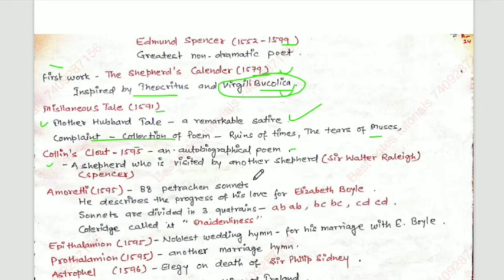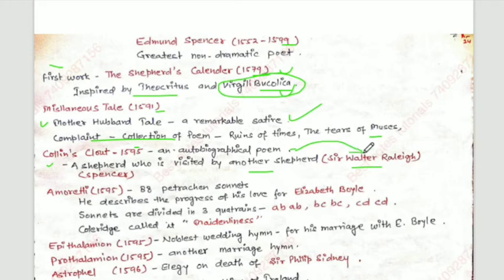In Colin Clout, a shepherd is visited by another shepherd representing Sir Walter Raleigh. So if asked who the visiting shepherd represents, the answer is Sir Walter Raleigh. Amoretti, also 1595, contains 88 Petrarchan sonnets — though sometimes the number 89 is also cited.